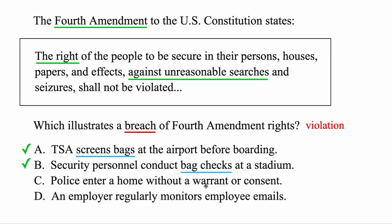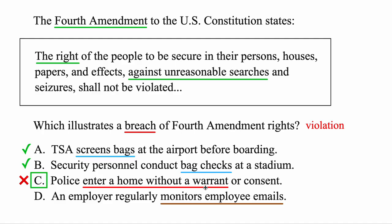The third: police enter a home without a warrant or consent. Police are not allowed to enter a home without a warrant — a legal document that authorizes a search. Without one, it would be unreasonable to come into your house and look through your stuff. So this is a breach and the correct answer. The last: an employer regularly monitors employee emails. A company is within their right to monitor employee emails to ensure nothing illegal is happening. That's not a violation. The Fourth Amendment protects you from unreasonable searches, like police entering your home without a warrant or searching your car without any cause.